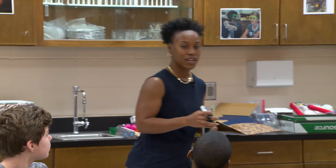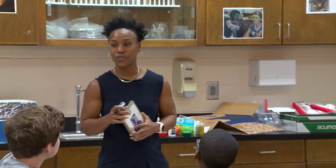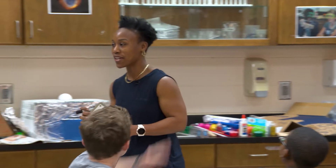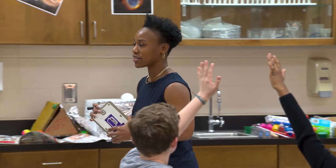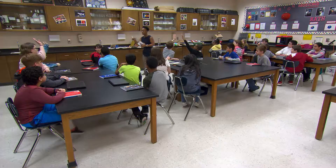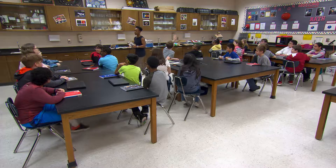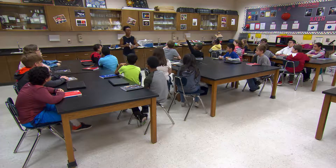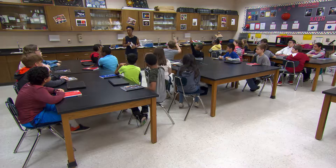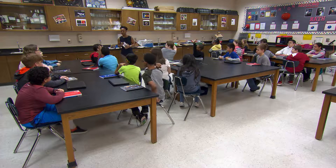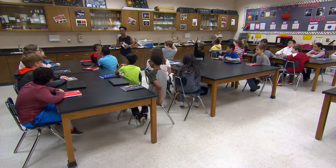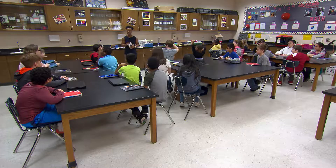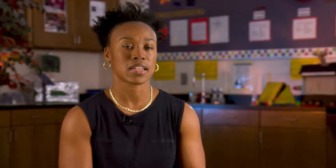So what do you think the astronauts are going to do when they get to Mars? Owen suggested they would build a solar panel to get heat from the sun.